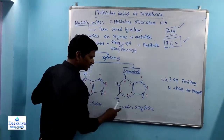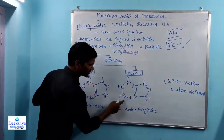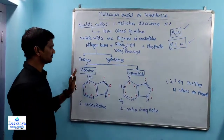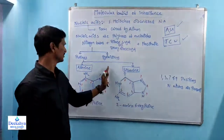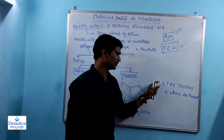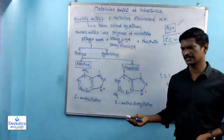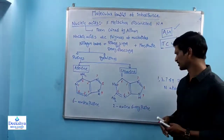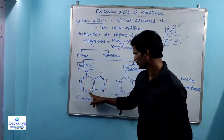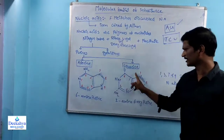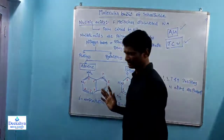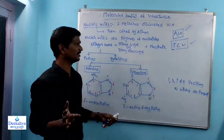Guanine has an amino group at position 2 and an oxygen atom at position 6. That is the difference between Adenine and Guanine — both belong to the purines. Within purines, nitrogen atoms are at positions 1, 3, 7, and 9.